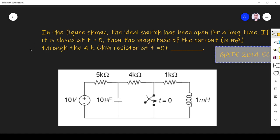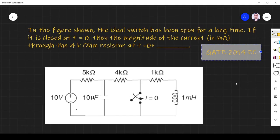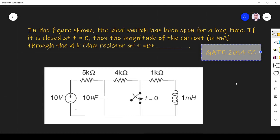Hi friends, in this video let us solve a transient response related question asked in the 2014 GATE EC paper. The question is: in the figure shown, the ideal switch has been open for a long time. If it is closed at t = 0, the magnitude of current in milliamps through the 4 kilo ohm resistor at t =